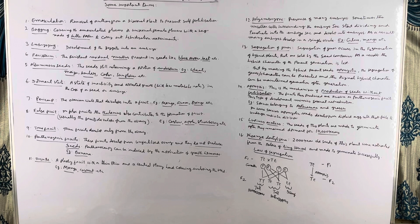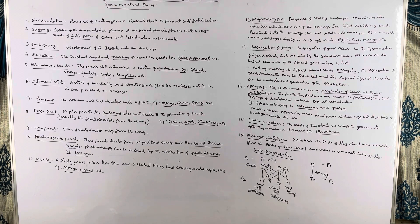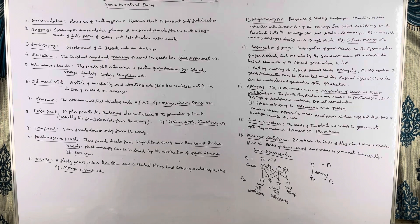Parthenocarpic fruits develop from unfertilized ovaries. The important thing is that such ovaries do not produce any seeds. Parthenocarpy can be induced by the application of growth hormones. An example of parthenocarpy is banana — seeds are completely absent and the banana is developed from an unfertilized ovary.